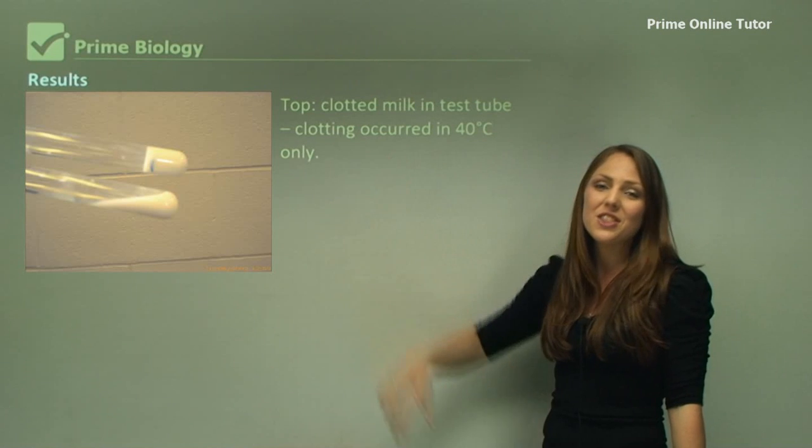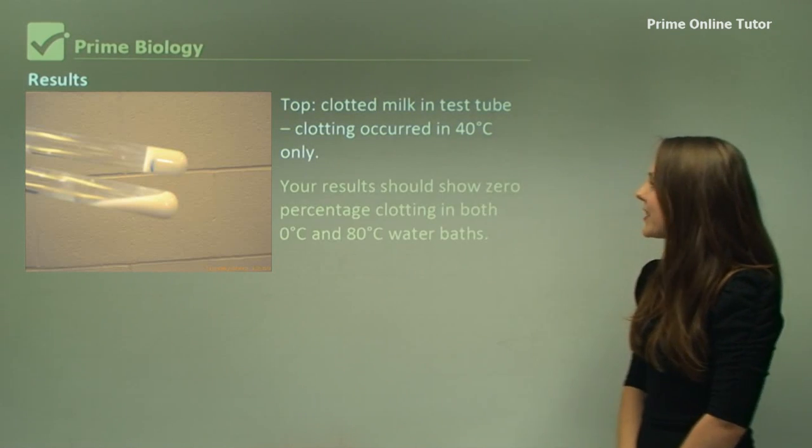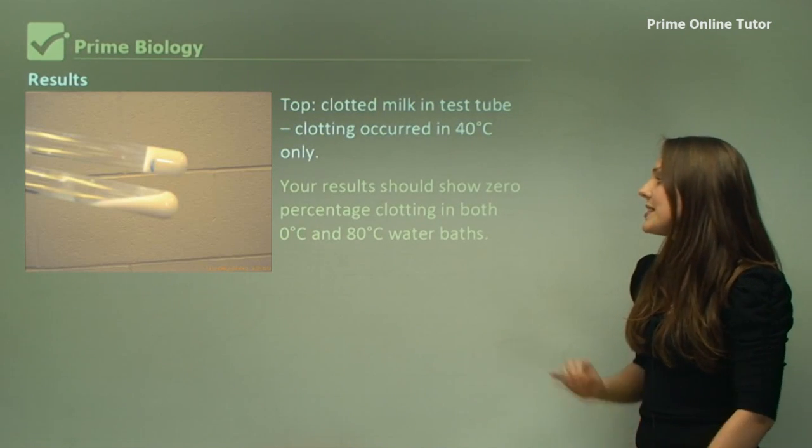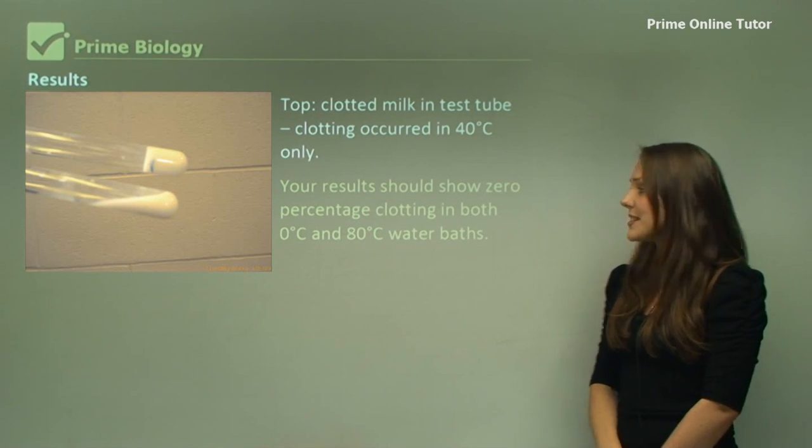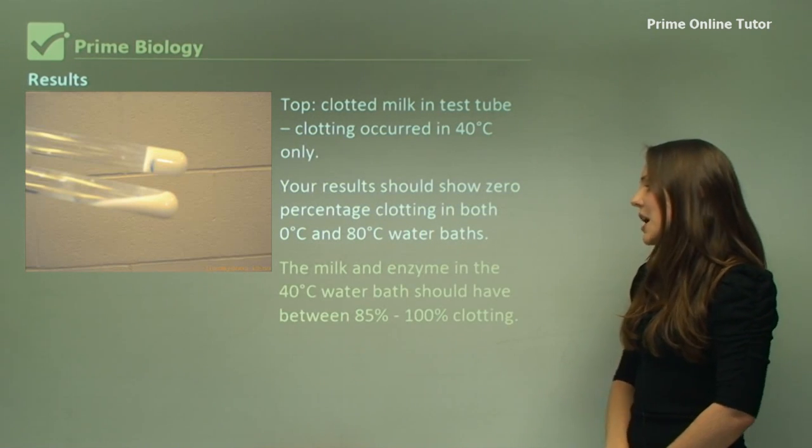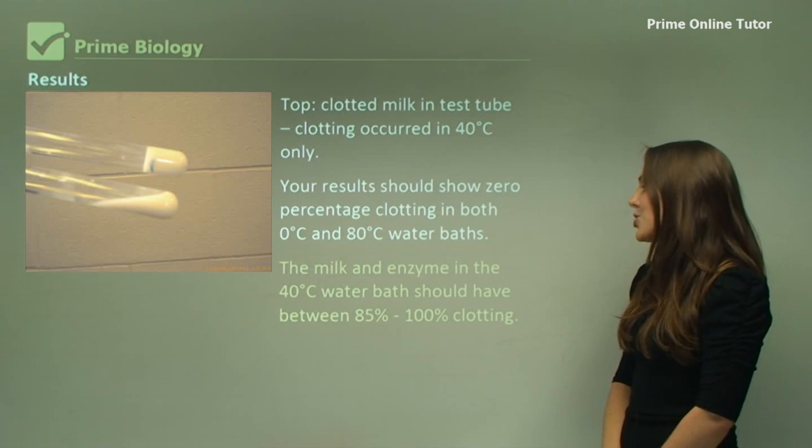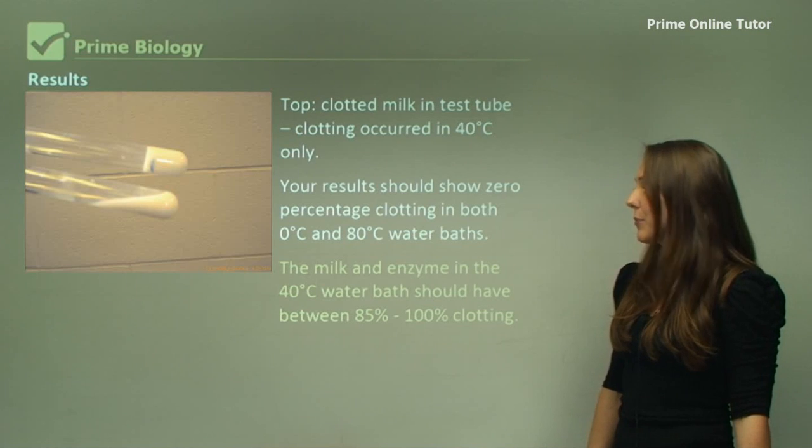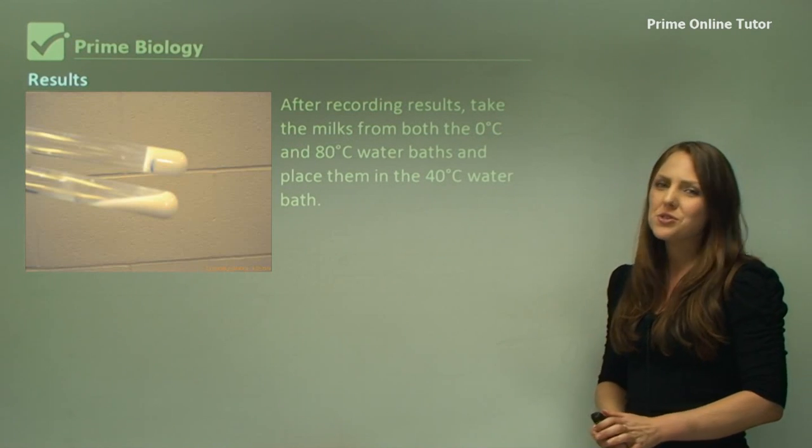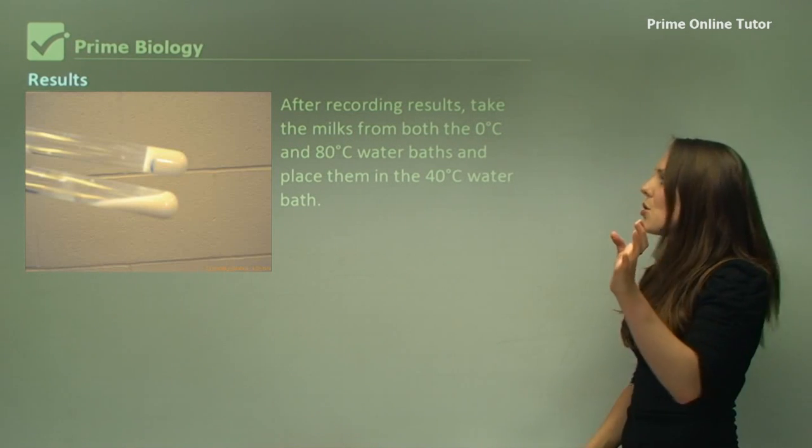Your results should show zero percent clotting in both zero and 80 degrees water baths. The milk and enzyme in the 40 degrees water bath should have between 85 percent to 100 percent clotting. After recording the results, you can then take the milks from both the zero degrees and the 80 degrees water baths and place them in the 40 degrees water bath.